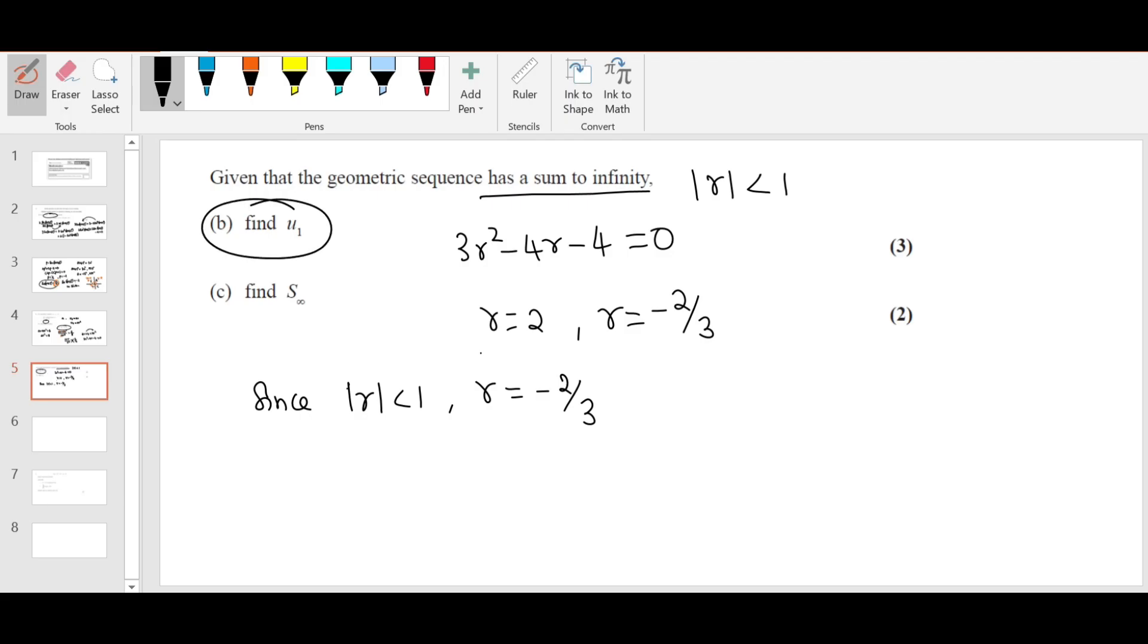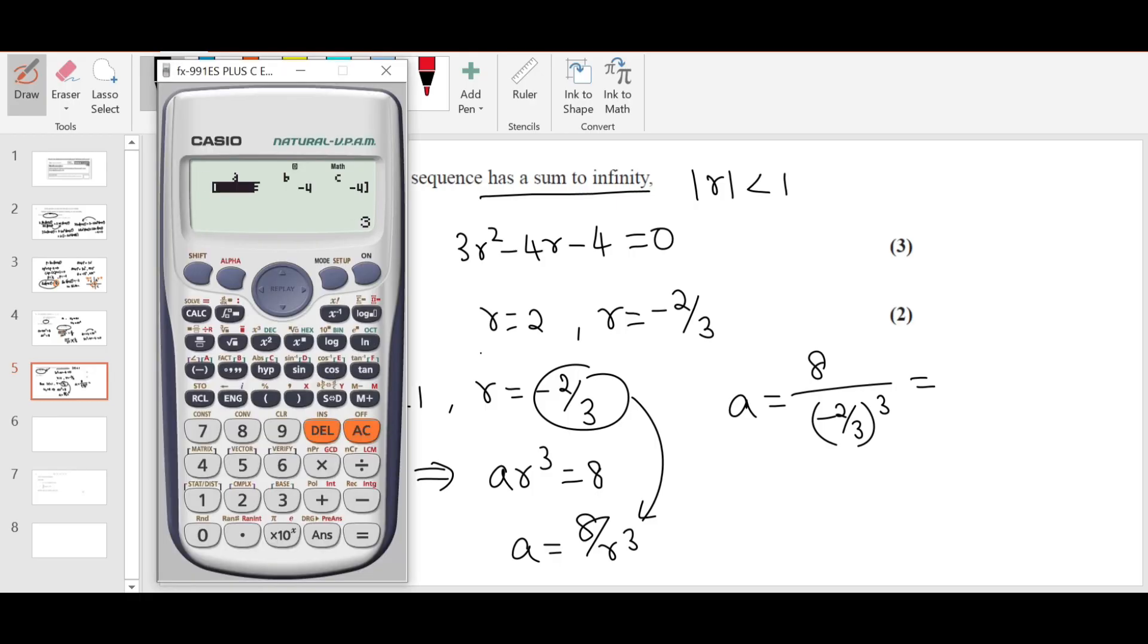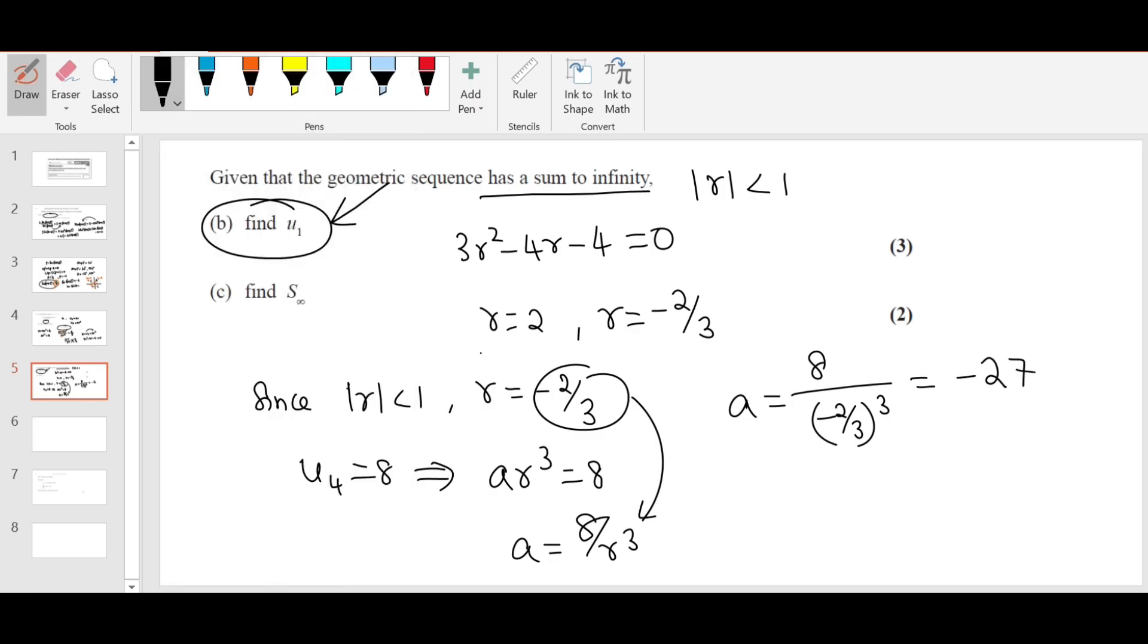So u1, you need to find the first term now. You know u4 is 8, that means AR cubed equals 8. So A is 8 over R cubed. Use this R here: A is 8 over minus 2 over 3 cubed. I'm going to type the exact same thing and see what happens. Minus 2 over 3 whole cubed is negative 27. Therefore, u1 is the first term, negative 27. That's all. A lot of working for the 3-mark question.